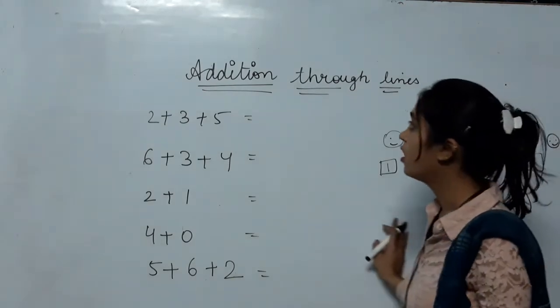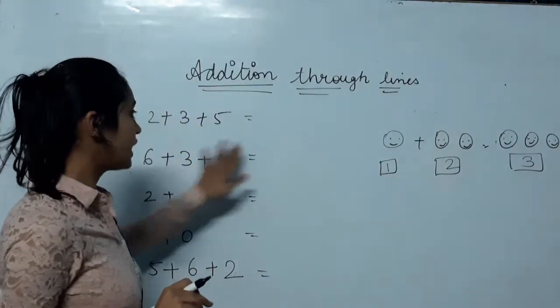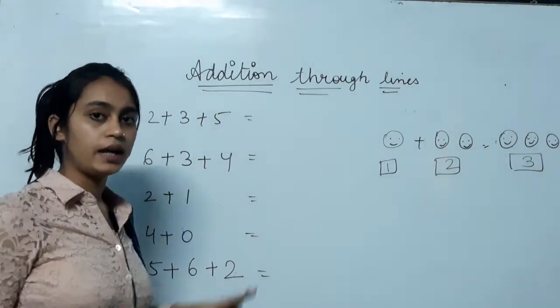So we did it this way. Now we'll do addition through lines. You have the sums written directly for you. You add the lines properly. Okay?